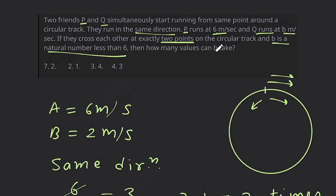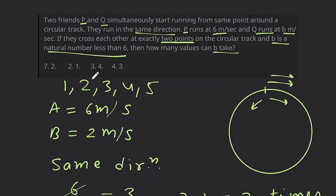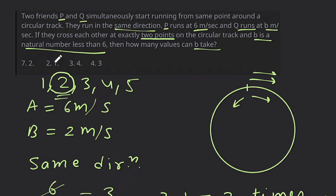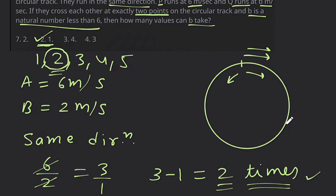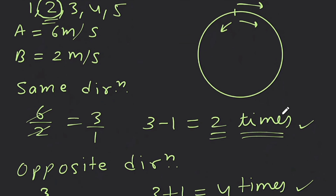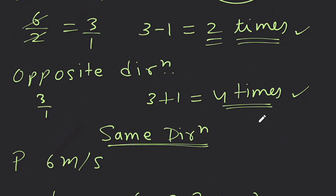The question asked how many values can B take. We checked B = 1, 2, 3, 4, 5 — all values less than 6. Only one value, B=2, satisfies the condition of meeting at exactly 2 points. So the answer is option B — one value. I hope the concept is clear. If you have any doubts, you can type in the comment section.